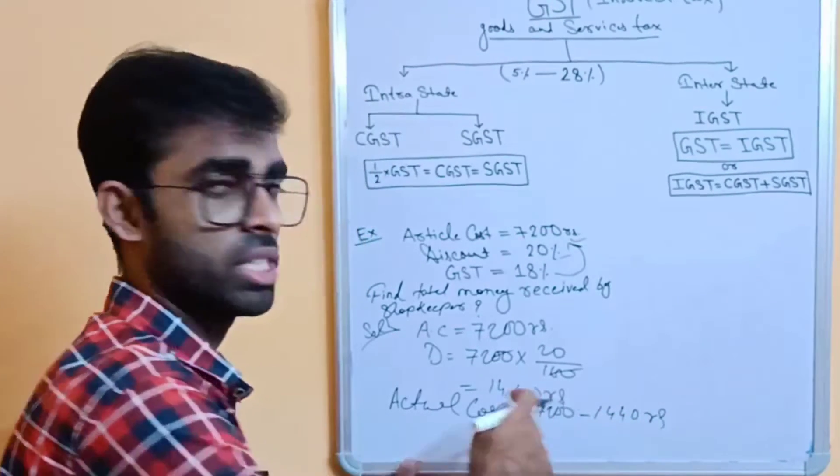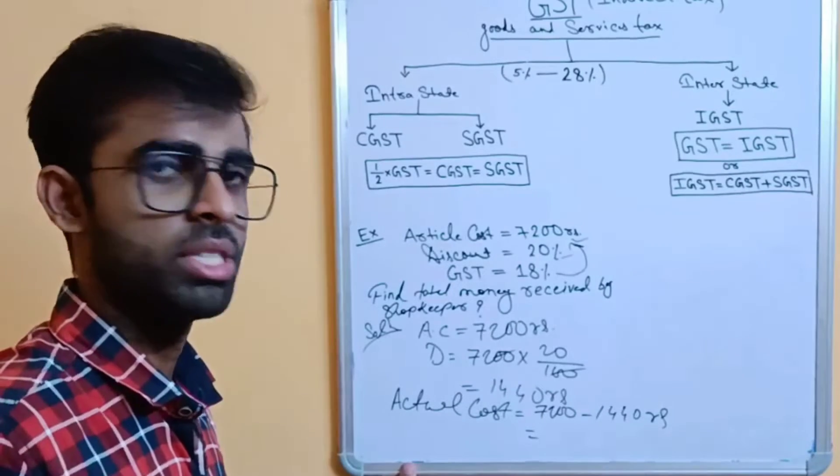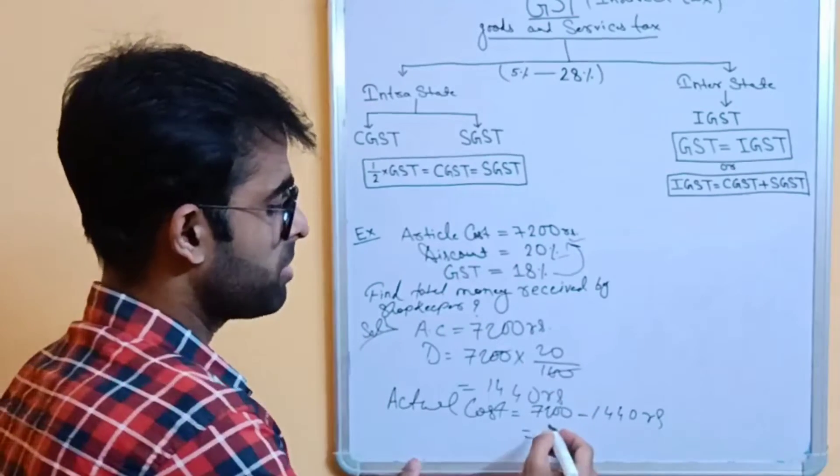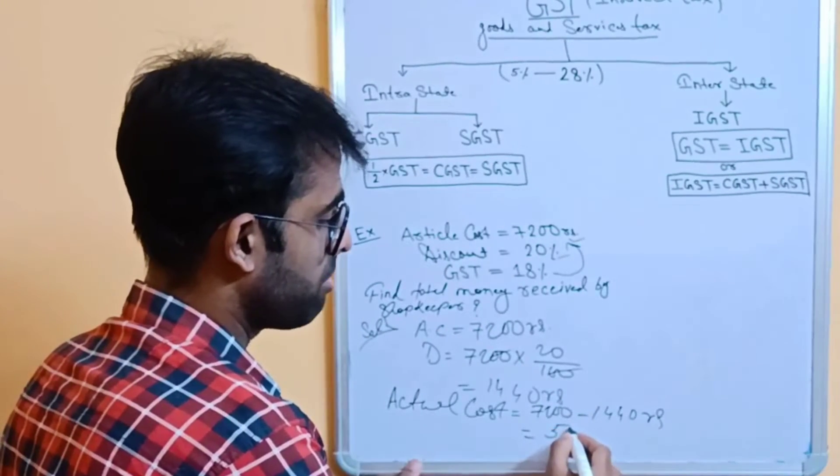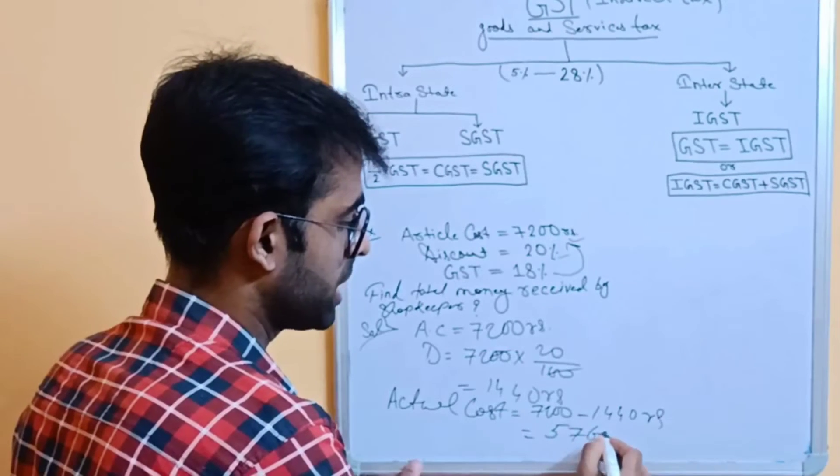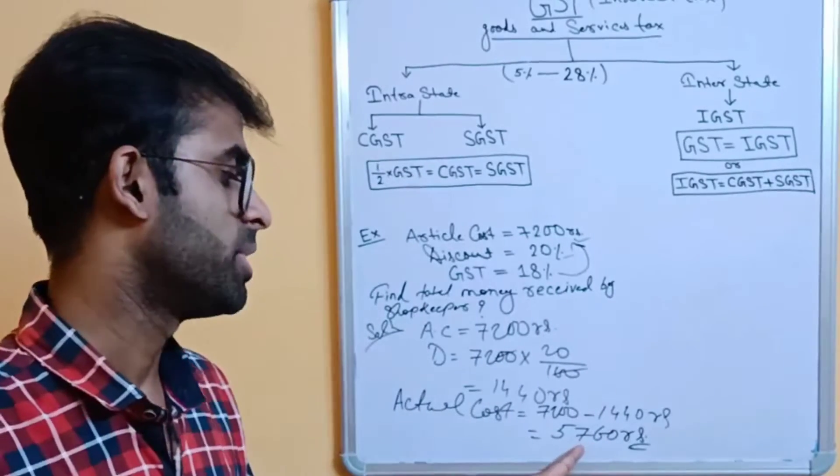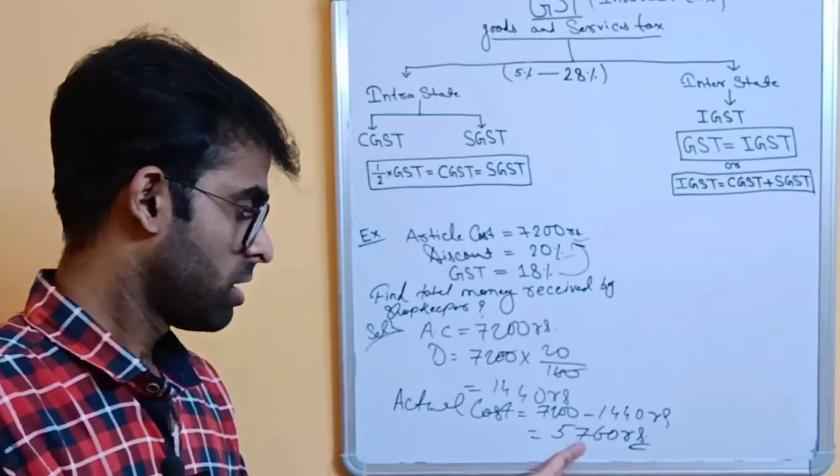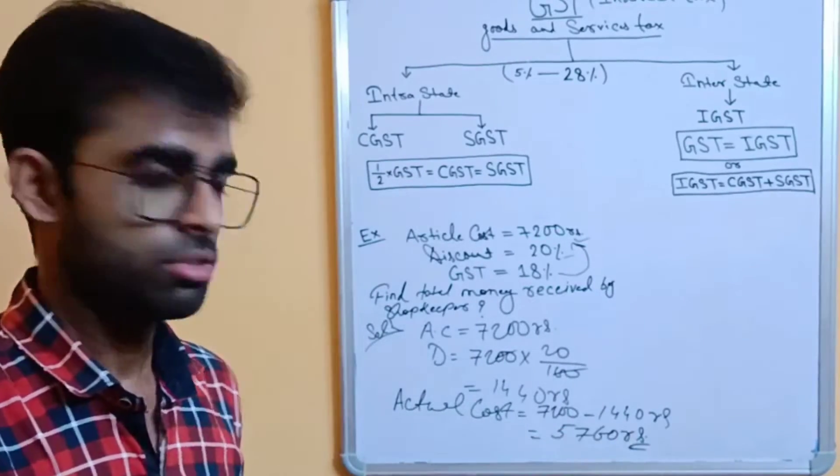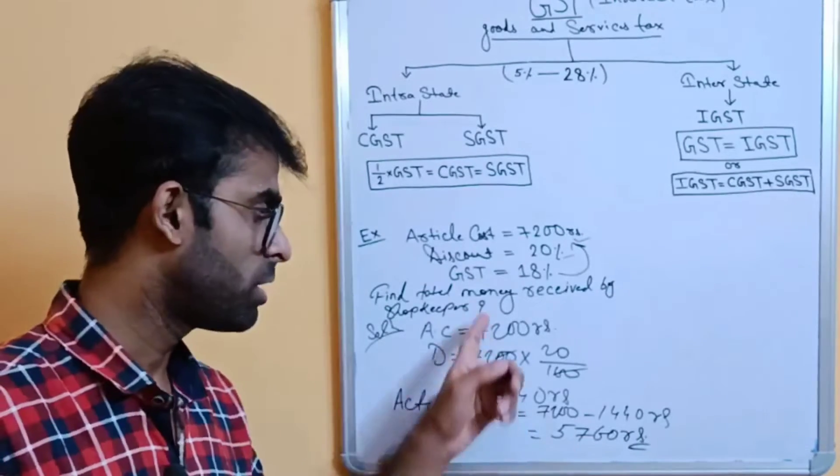So, the actual cost of this article after giving discount will be 7200 minus 1440 rupees. Just subtract this value. After subtracting the value we will get 5760 rupees.